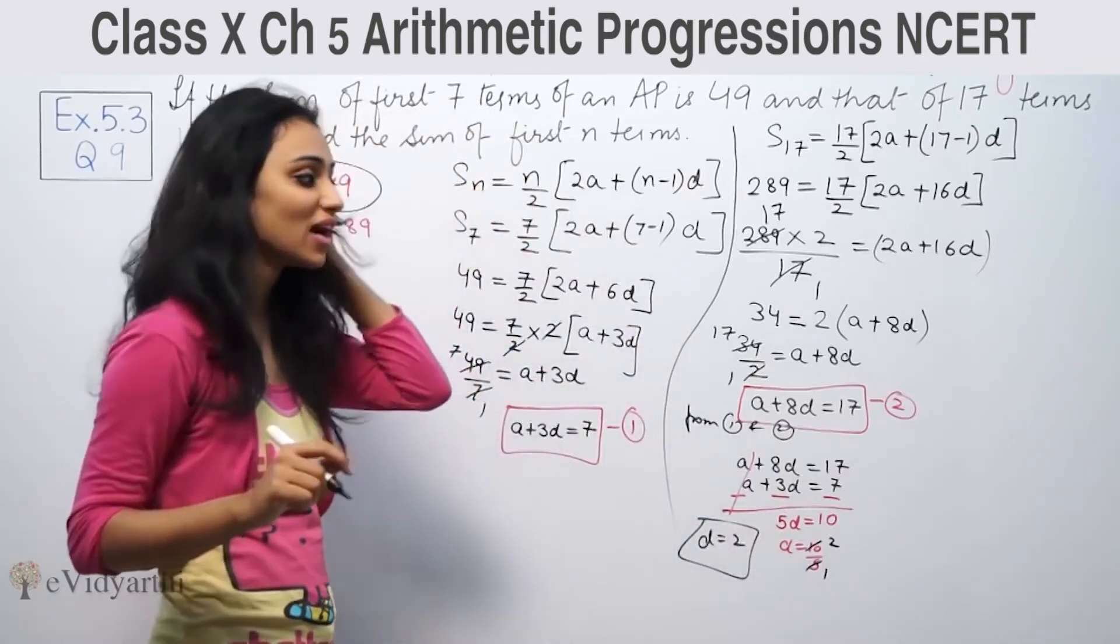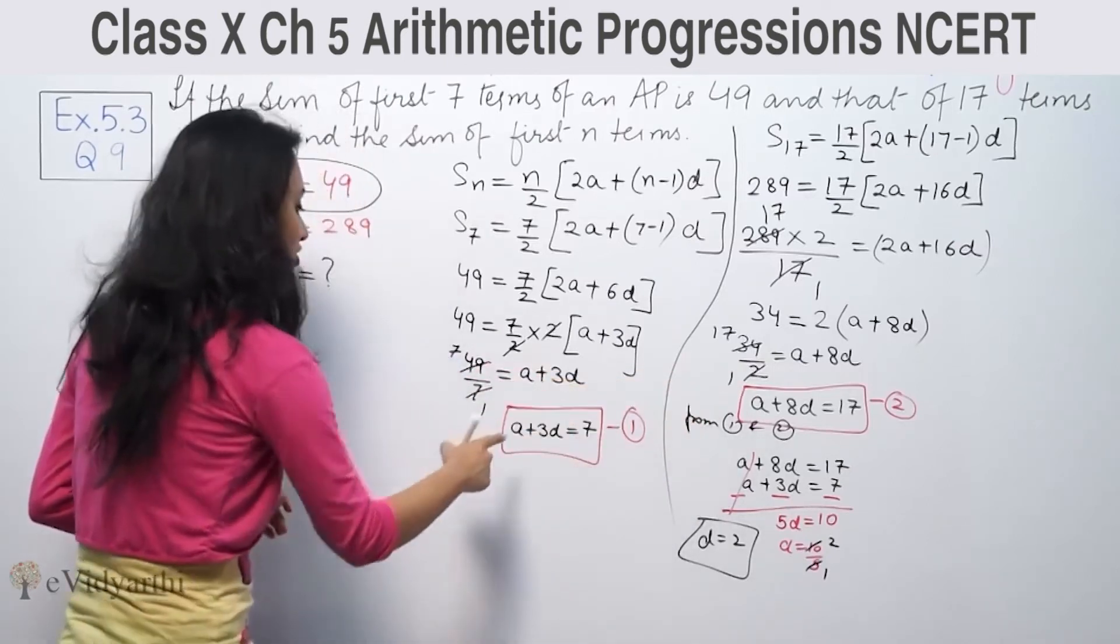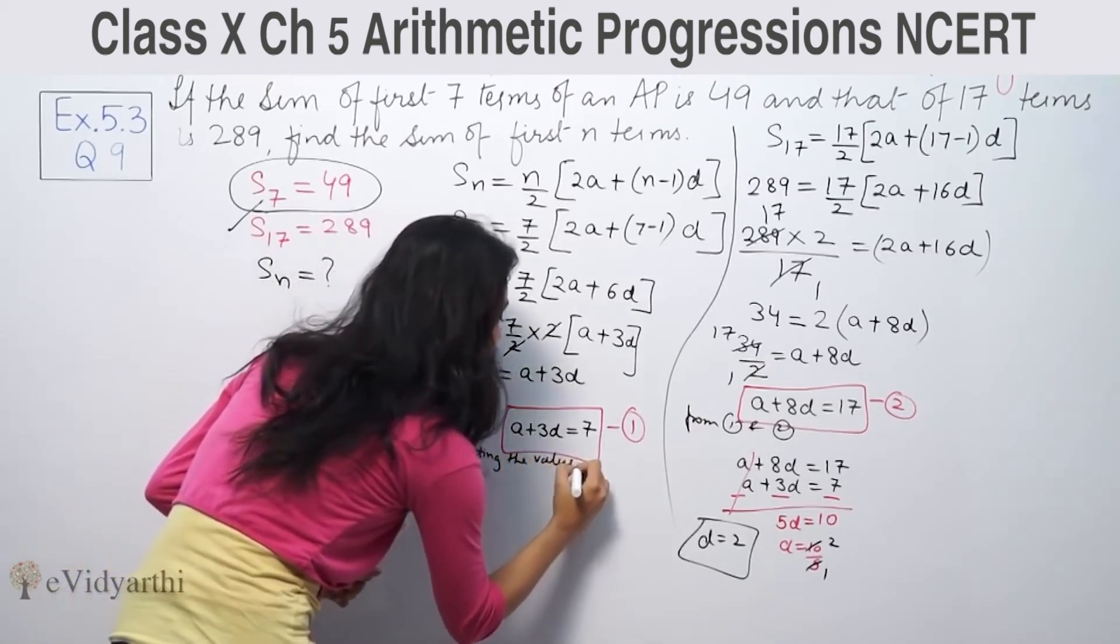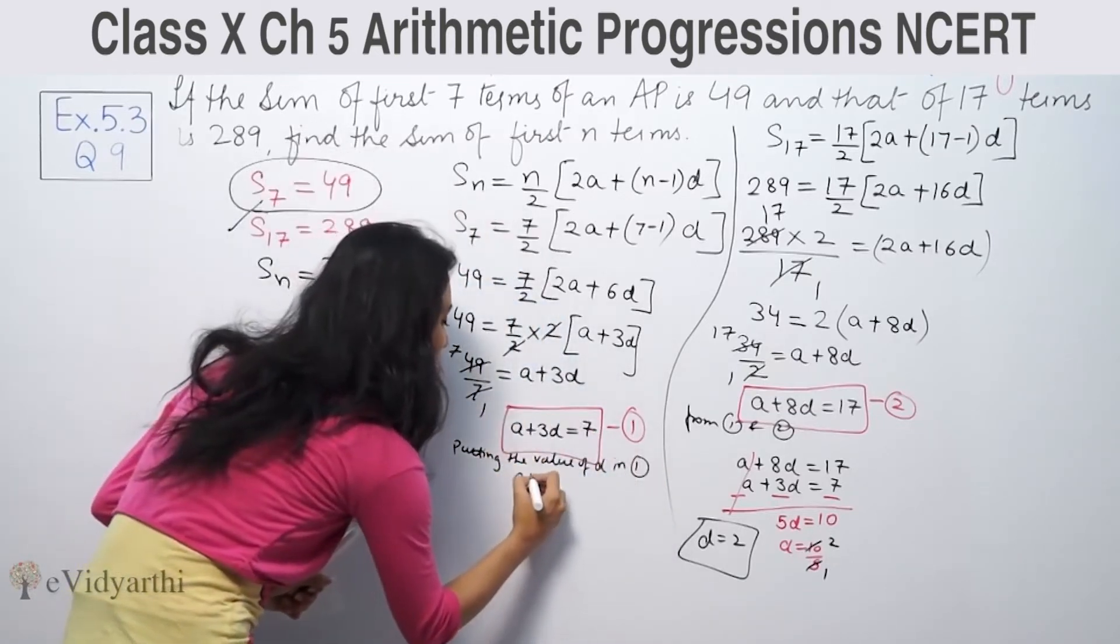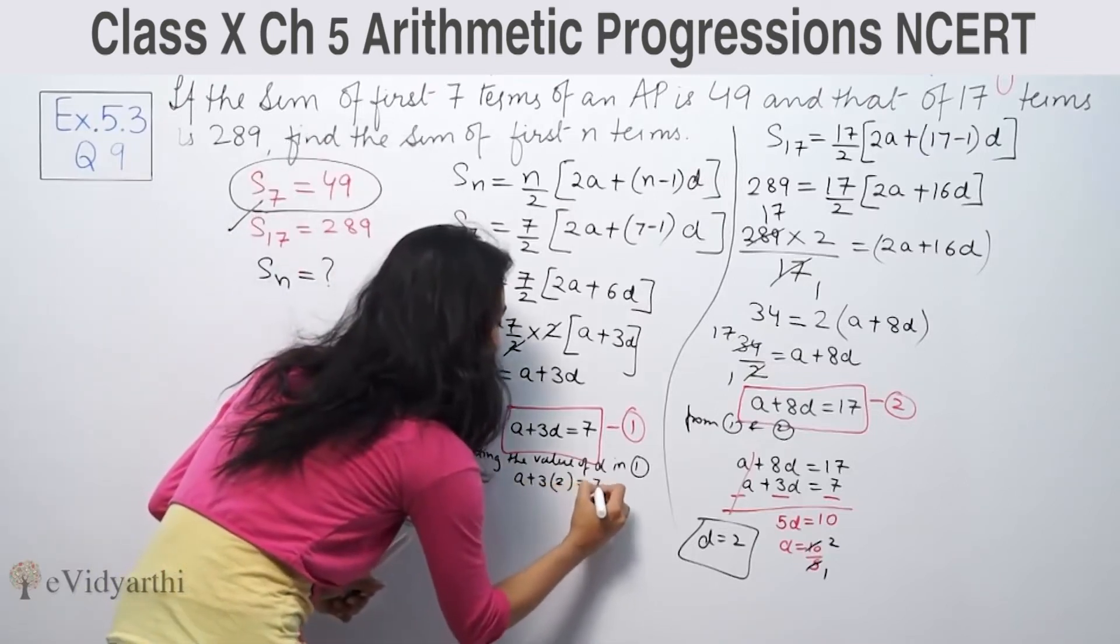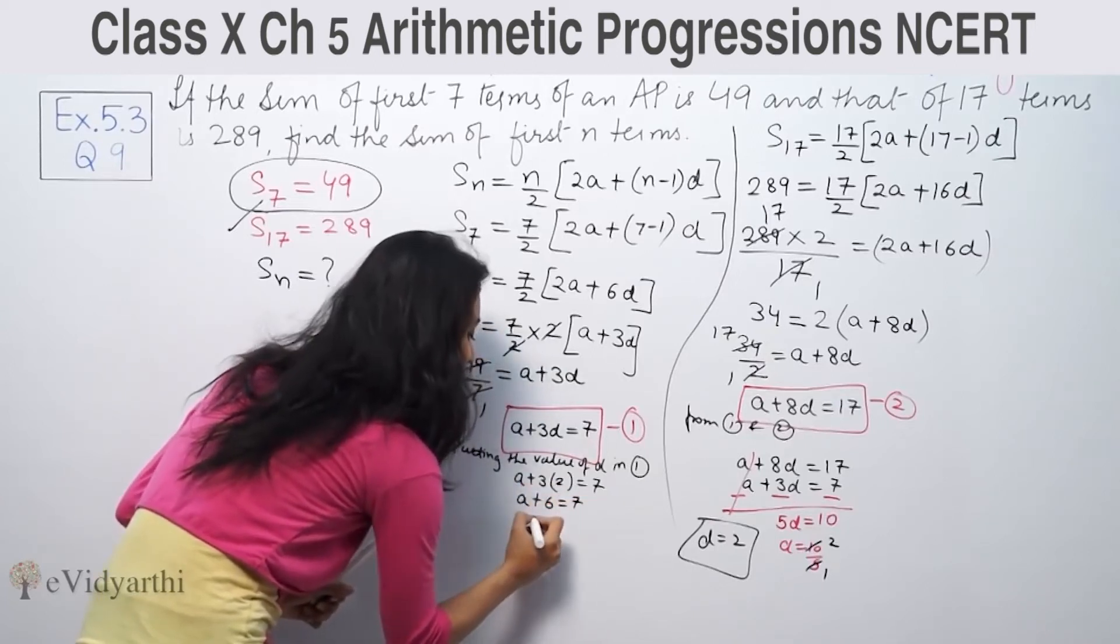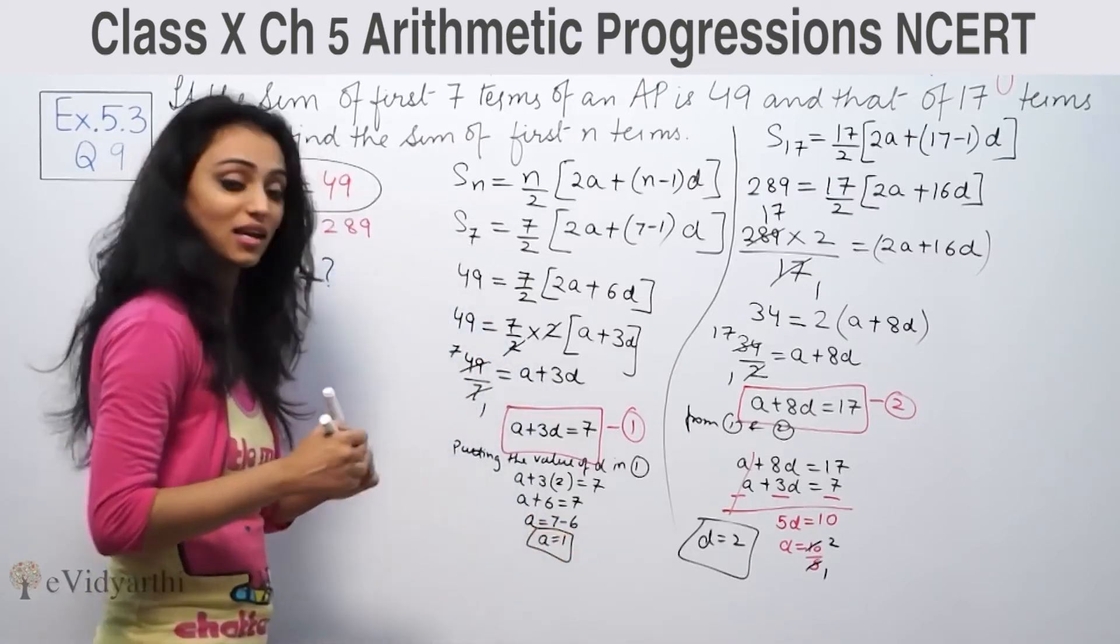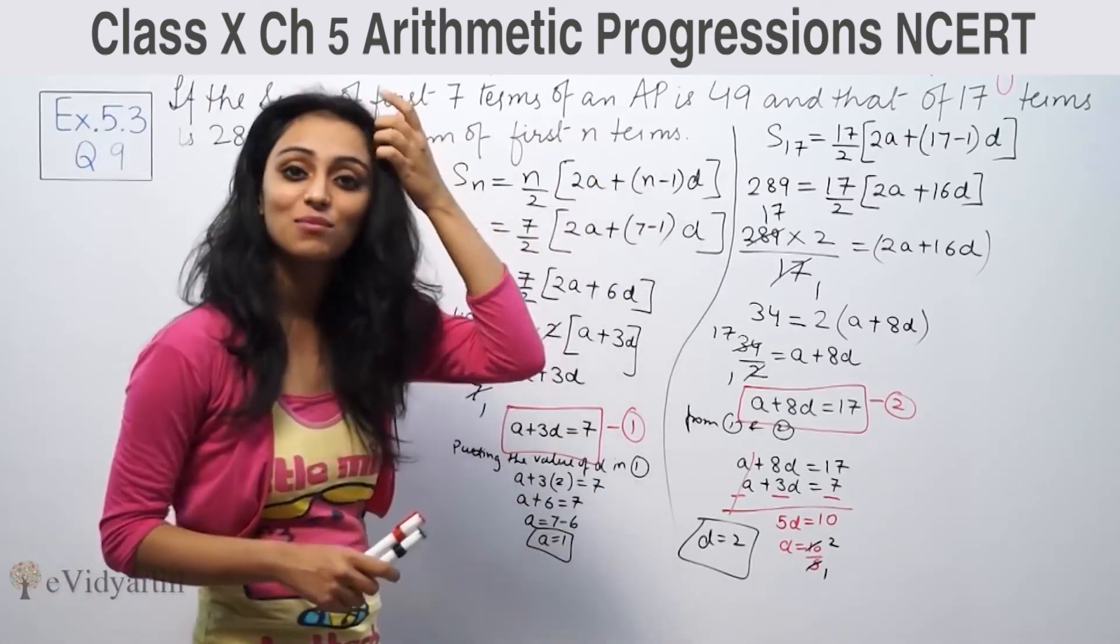Now putting the value of d in the first equation: a + 3(2) = 7, so a + 6 = 7, which gives a = 1. So we have both a and d. Now we'll find Sn, sum of n terms.